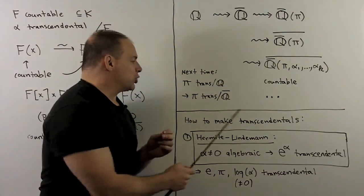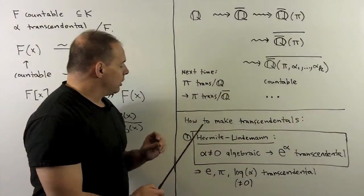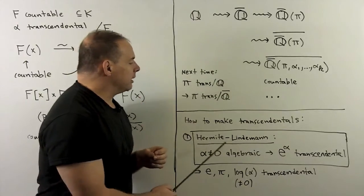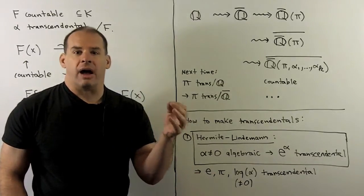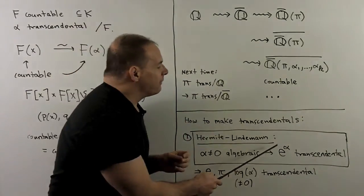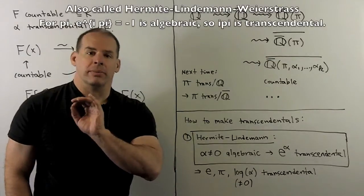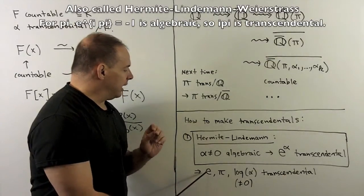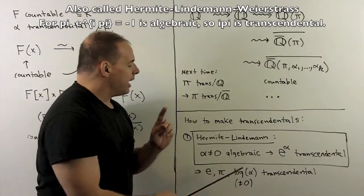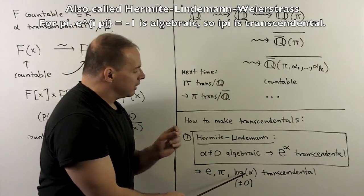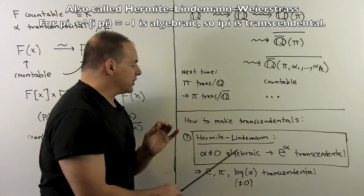Now how do we make transcendentals? Here we're just going to give an overview of the theory. First big result, we have Hermite-Lindemann. This says, if we take algebraic number alpha, which is non-zero, that e to the alpha is transcendental. So from this we get e will be transcendental. With some work, you can show that pi is transcendental using this. And we have log of alpha, whenever this is non-zero, it will be transcendental when alpha is algebraic.